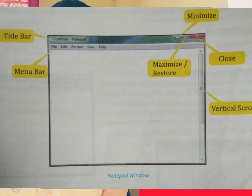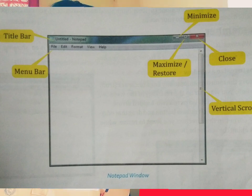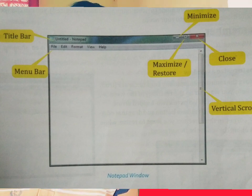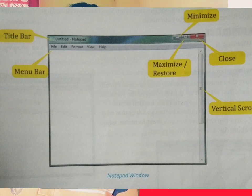The vertical scroll bar helps you scroll either to the top or the bottom of the screen. There are three control buttons: the Minimize button, the Maximize button, and the Close button.